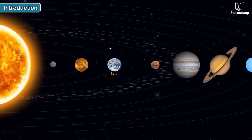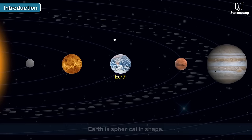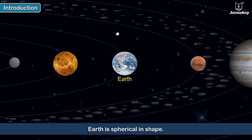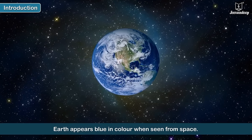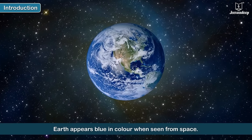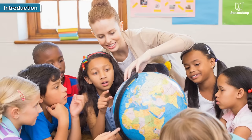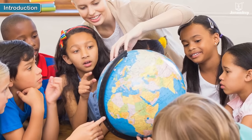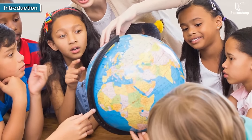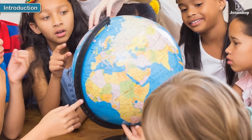Our planet Earth, like all other planets, is spherical in shape. It appears blue in color when seen from space. However, had there not been a small model of this huge planet, it would be impossible for man to locate far off places on it.